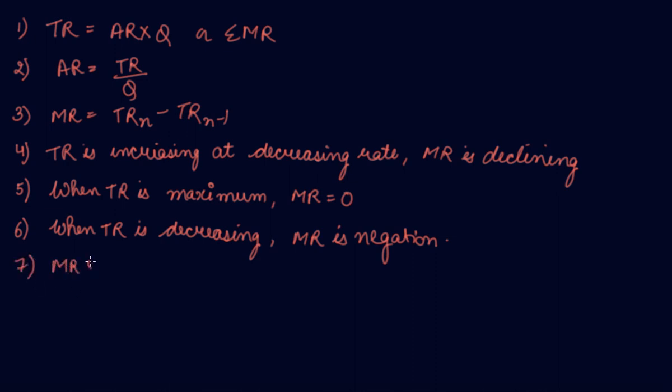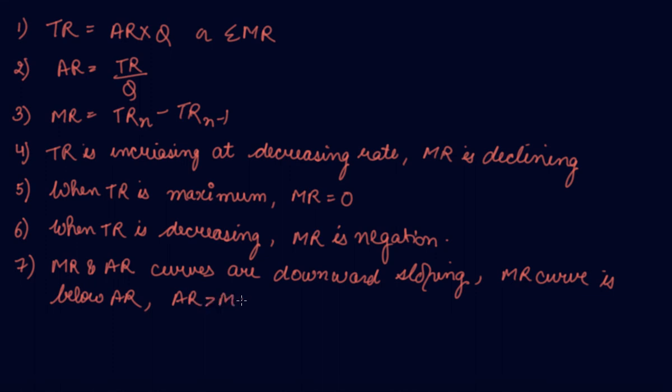Your MR and your AR curves are downward sloping. And then, your MR curve is below AR, which we did in the relationship of MR and AR video, that your AR is greater than your MR. So these are the relationships that we have drawn from the graph we made in this video.